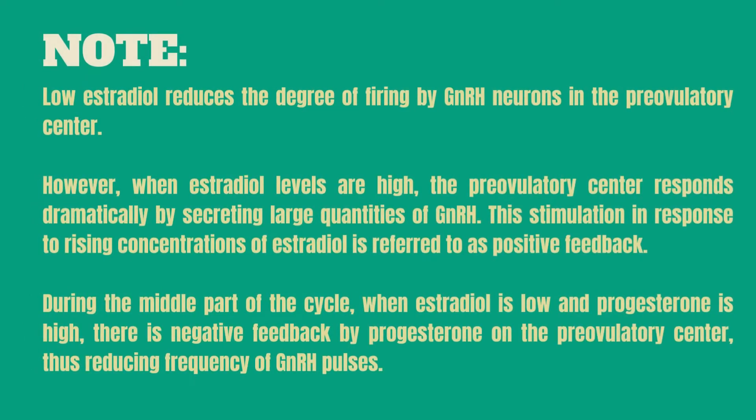The following should be noted: low estradiol reduces the degree of firing by GnRH neurons in the pre-ovulatory center. However, when estradiol levels are high, the pre-ovulatory center responds dramatically by secreting large quantities of GnRH. This stimulation in response to rising concentrations of estradiol is referred to as positive feedback. During the middle part of the cycle, when estradiol is low and progesterone is high, there is negative feedback by progesterone on the pre-ovulatory center, thus reducing the frequency of GnRH pulses.